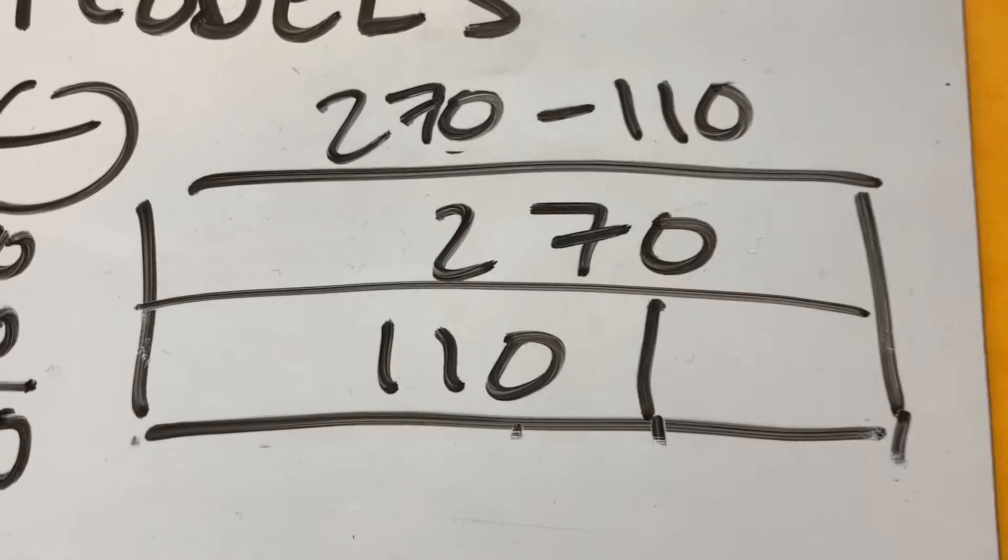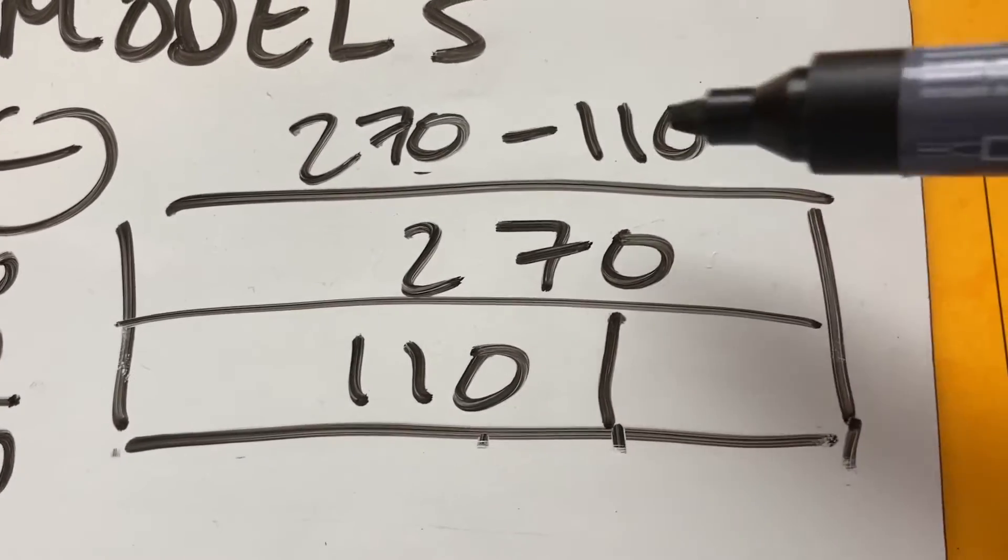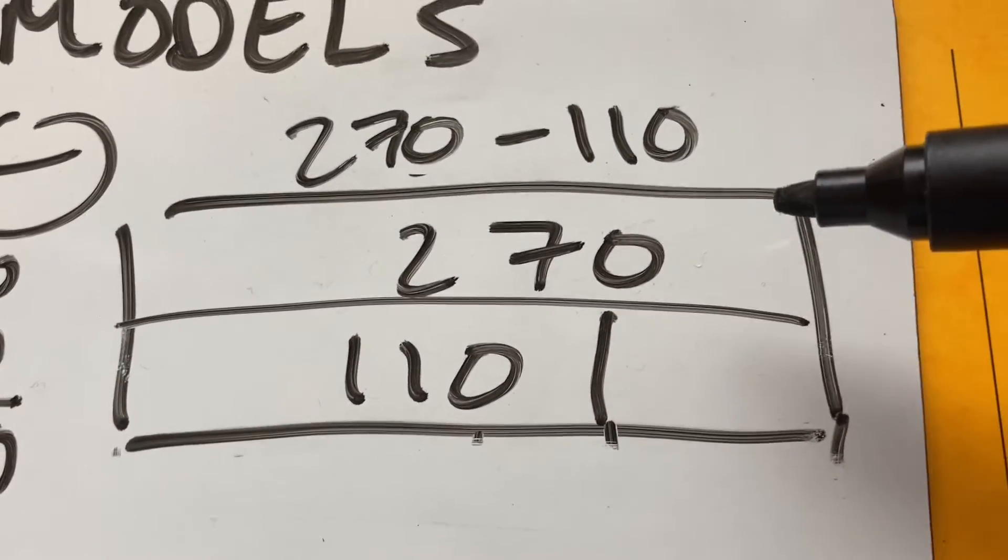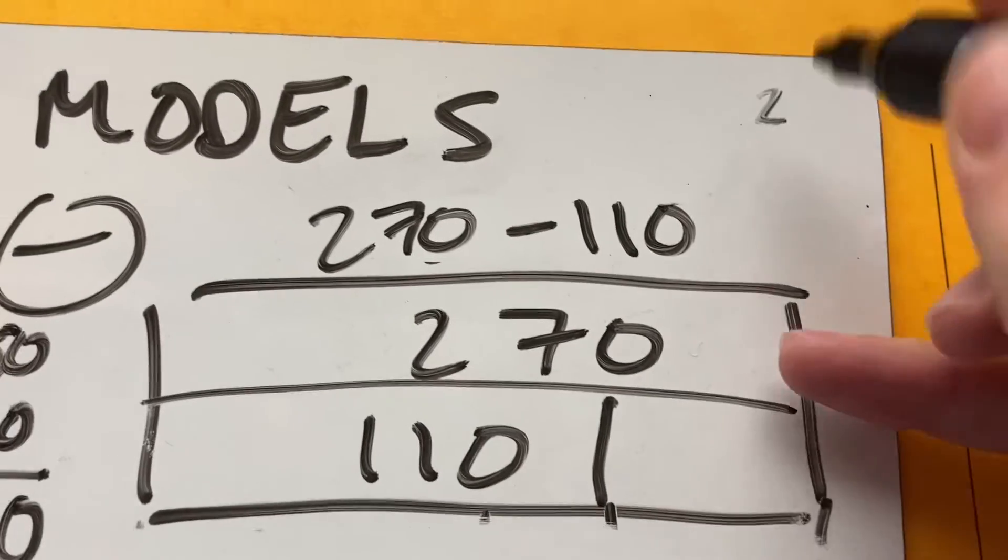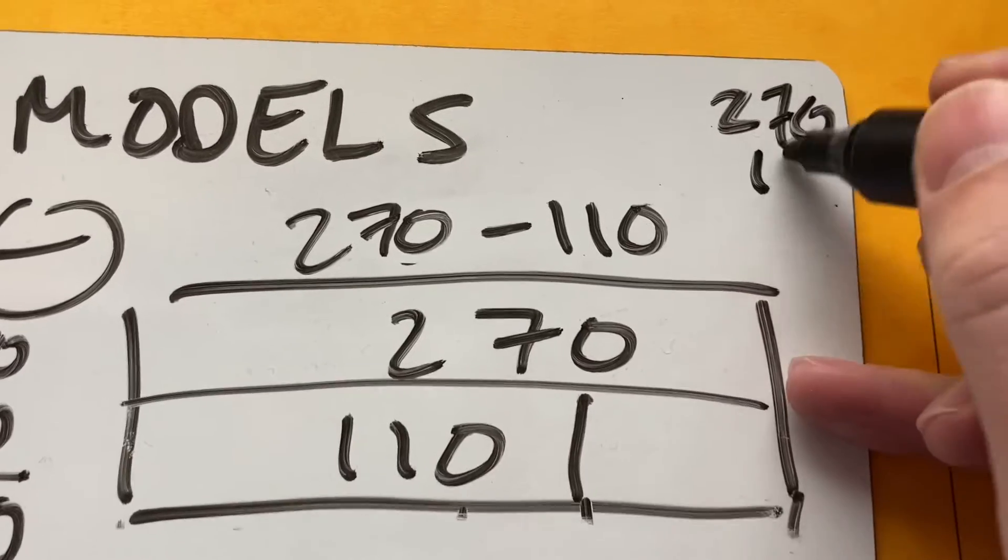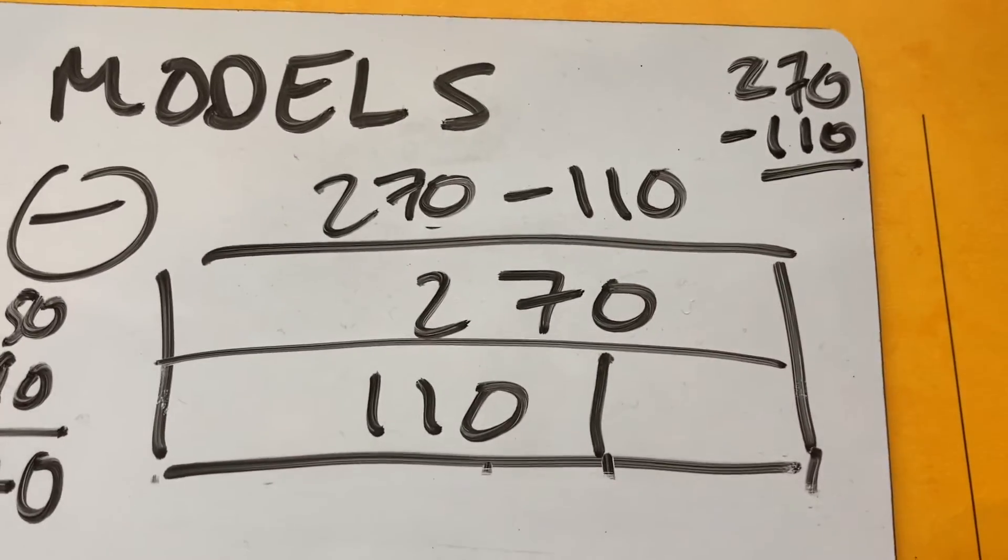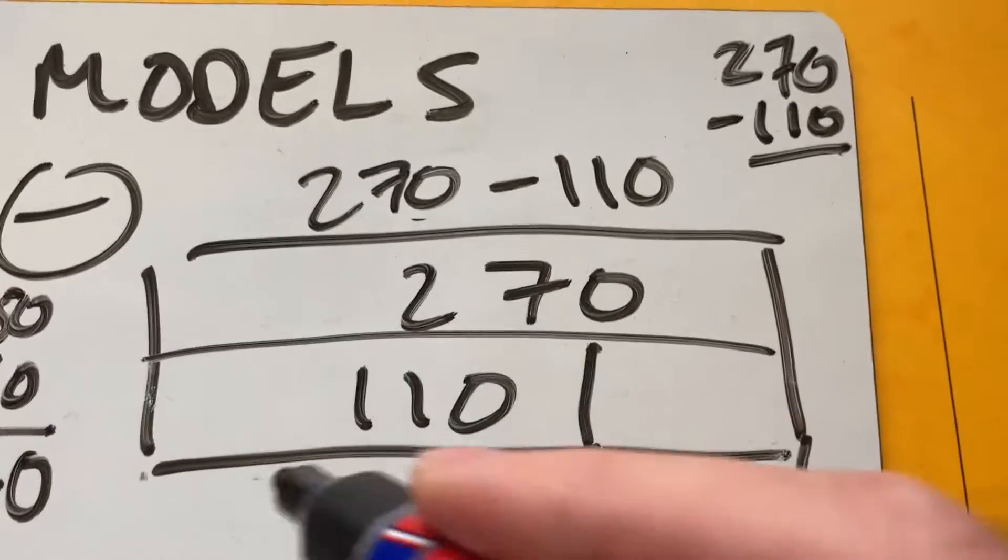Let's look at subtraction now. I've got 270 minus 110. So that might not be the most straightforward subtraction. Again, you might want to compare this to how you do it in a column subtraction. We'll look at that in a second. I'm going to do the same thing I did with addition.